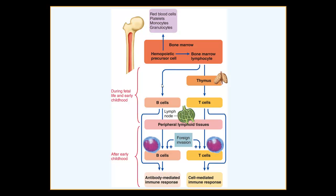Both B and T lymphocytes, like any blood cell, are made in the red bone marrow — the house of the hematopoietic stem cell that differentiates into different lineages. T cells leave the bone marrow early and mature in the thymus, a gland behind the sternum. B cells stick around longer and mature in the bone marrow. This maturation process is critical — it's how immunocompetence and self-tolerance are established.